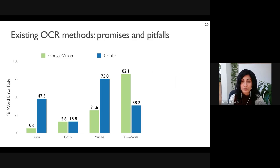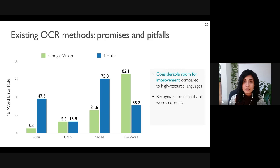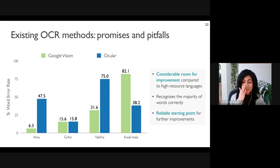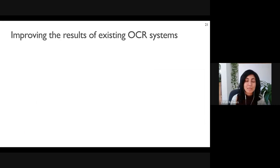The existing methods have reasonable performance on our dataset with word error rates lower than 40 percent across all languages, but compared to OCR accuracy in higher-resource settings, there is considerable room for improvement. Since the majority of words are recognized correctly by these systems, we use these transcriptions as a starting point for further improvements rather than attempting to train a new model. The remainder of the talk presents methods to improve results using automatic OCR post-correction.